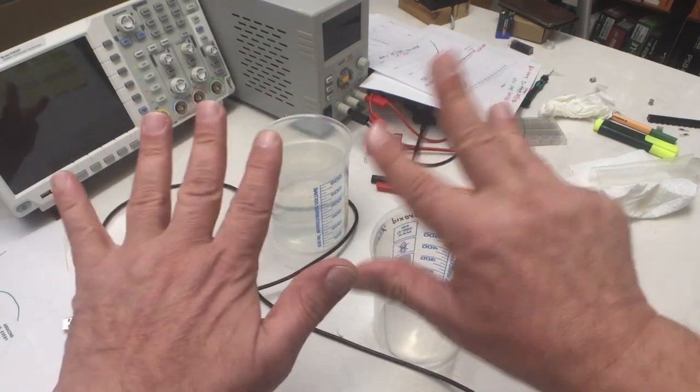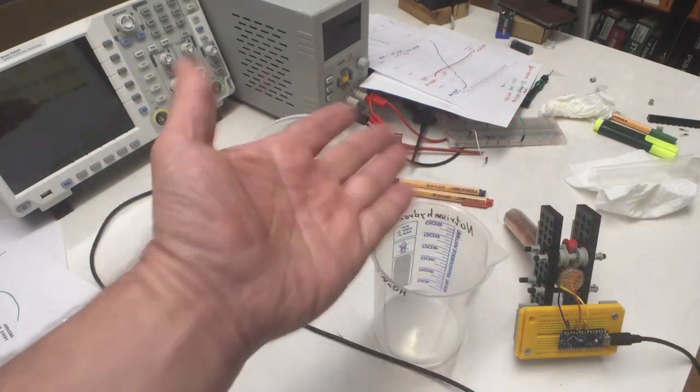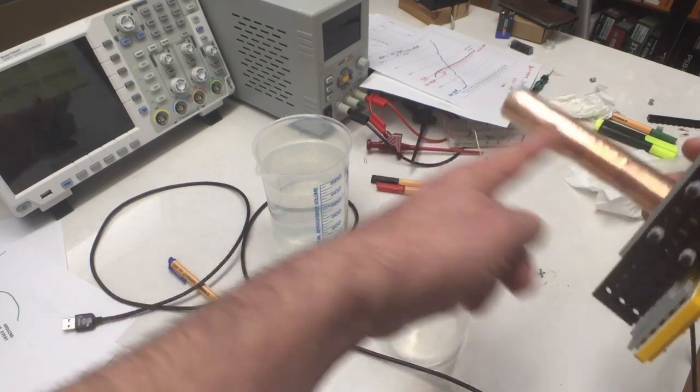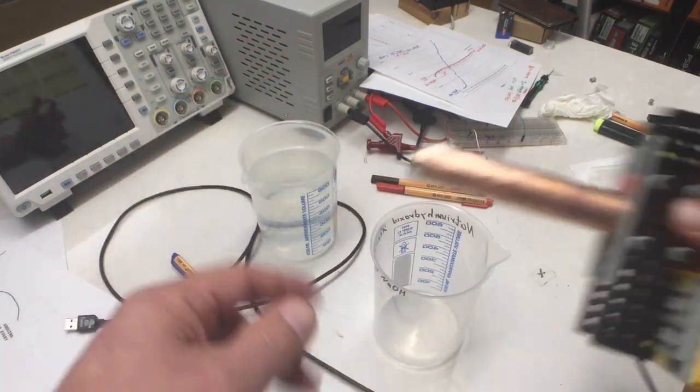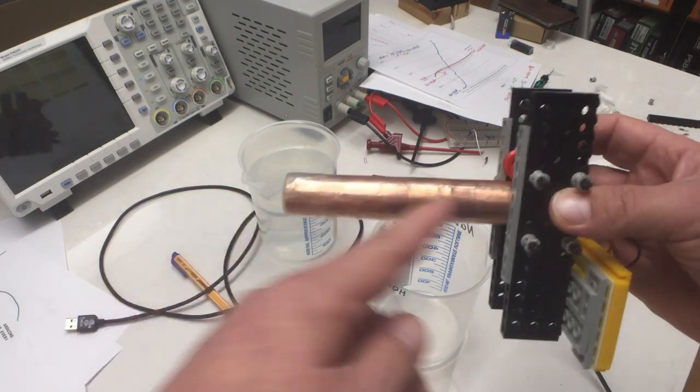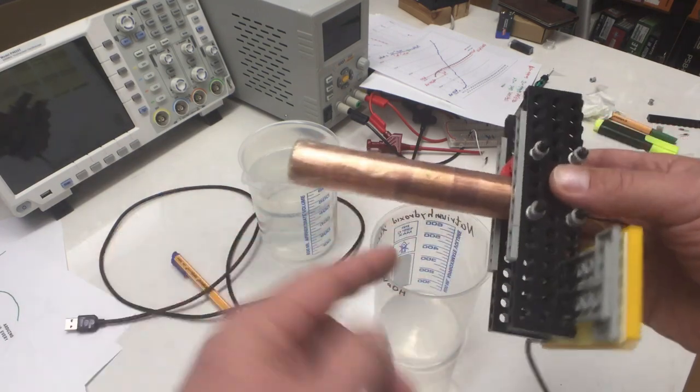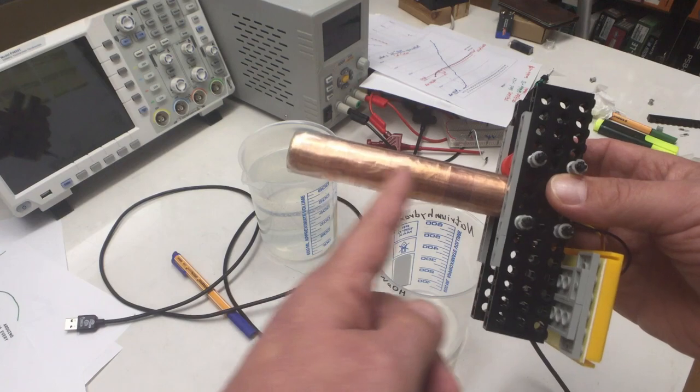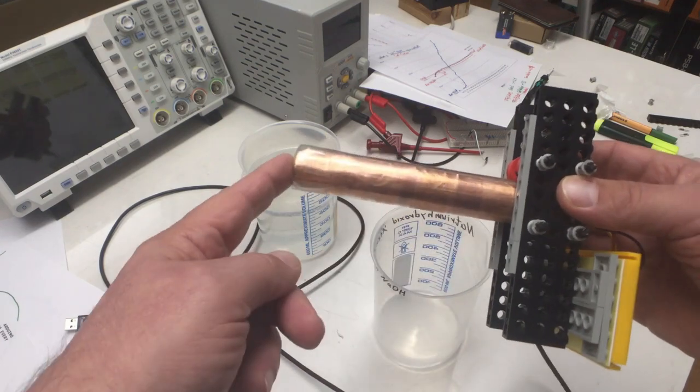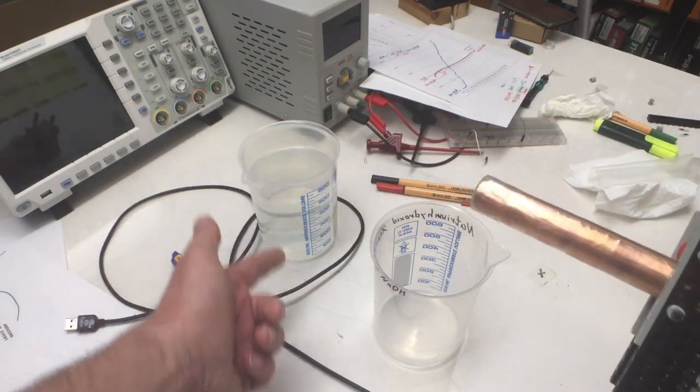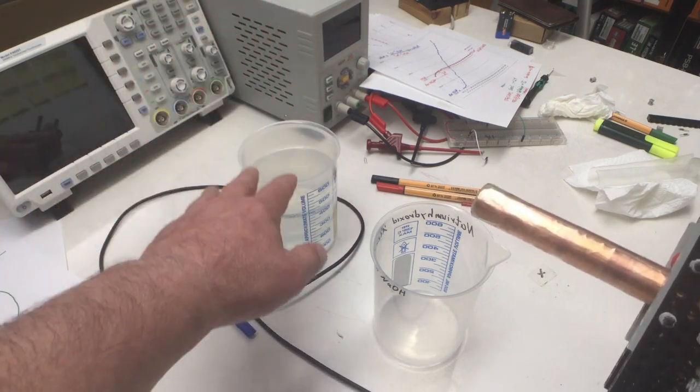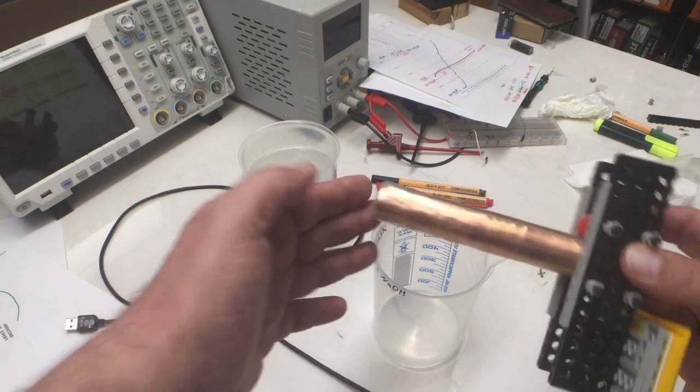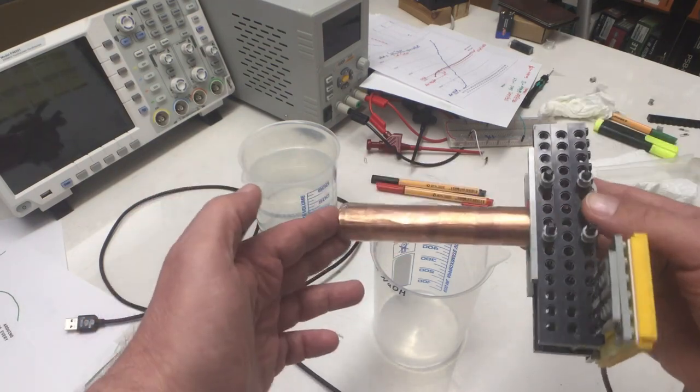Welcome back to the ninth video about capacitive liquid level sensing. In the previous video, we verified that our sensor setup consisting of a level sensor and a reference sensor is indeed capable of measuring the liquid levels of liquids with different dielectric constants without requiring recalibration.